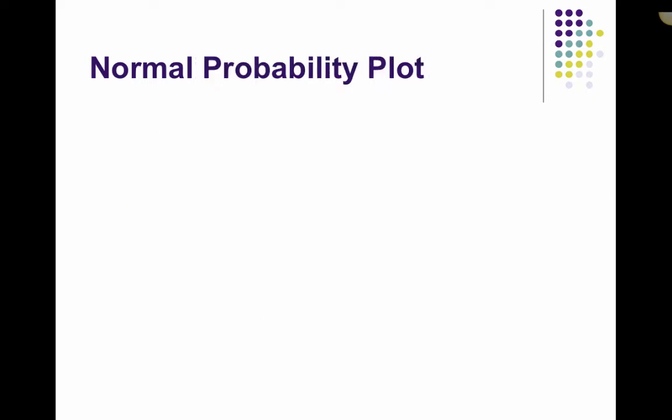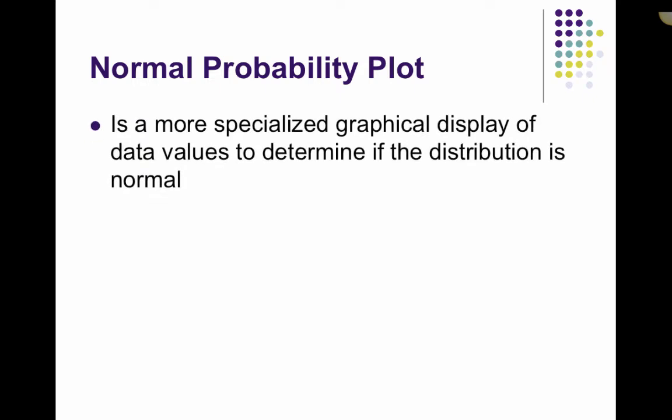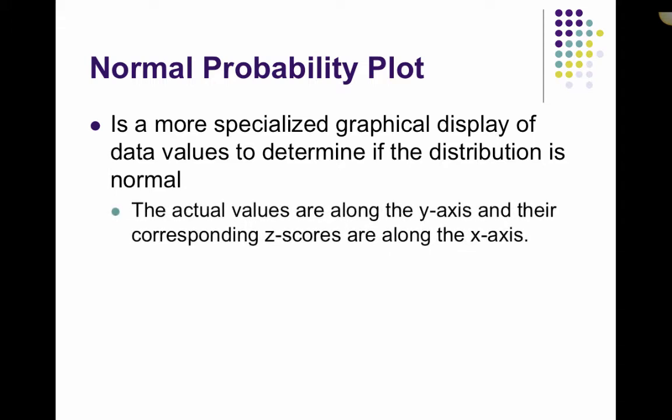The normal probability plot is a more specialized display of the data that will tell us if the distribution is normal. So this is found by plotting the values of the data along the y-axis, and then the z-scores that correspond to those data values along the x-axis.